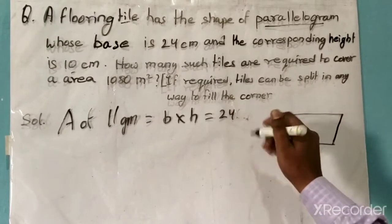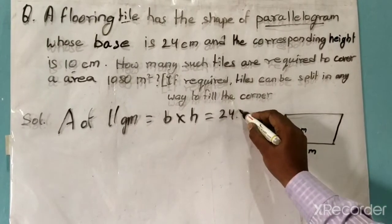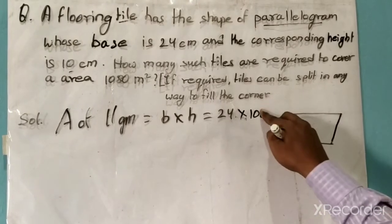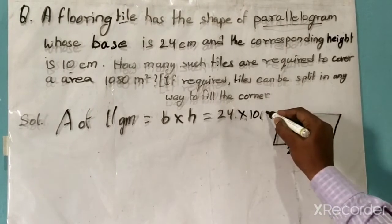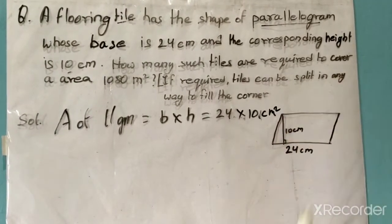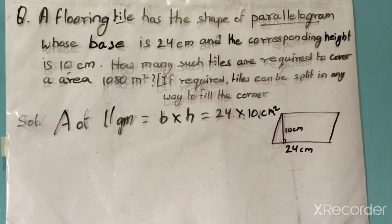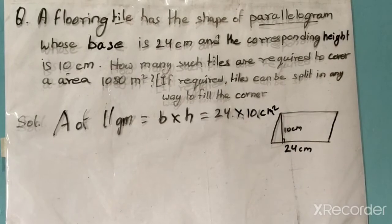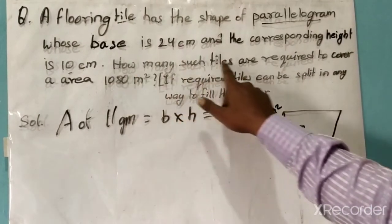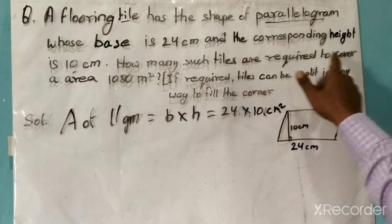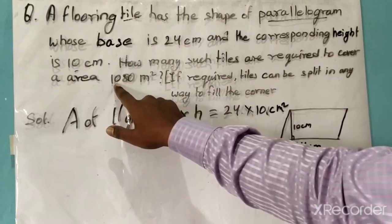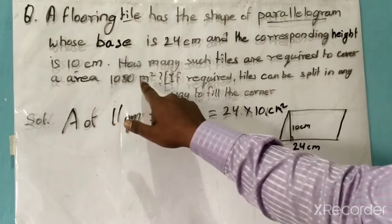So 24 into 10 gives us 240 centimeters square. Now the question is how many such tiles are required to cover the area of 1080 square meters.